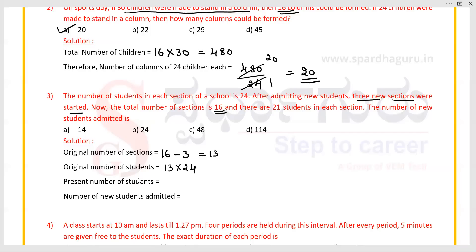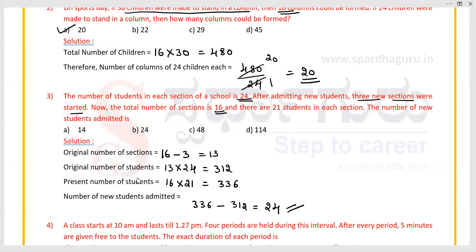The original number of students is 13 sections multiplied by 24, which gives 312. The total present number of students is 16 sections multiplied by 21, which gives 336. To find the number of new students admitted, subtract: 336 minus 312 equals 24. So 24 new students were admitted to the school. Option B is the right answer.